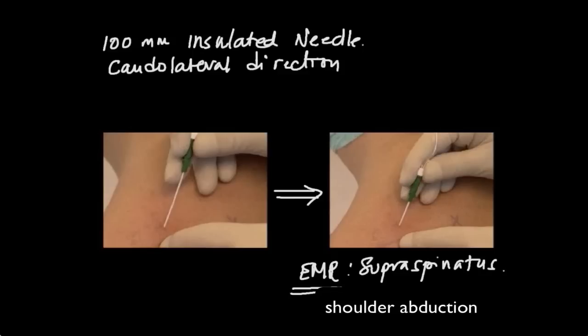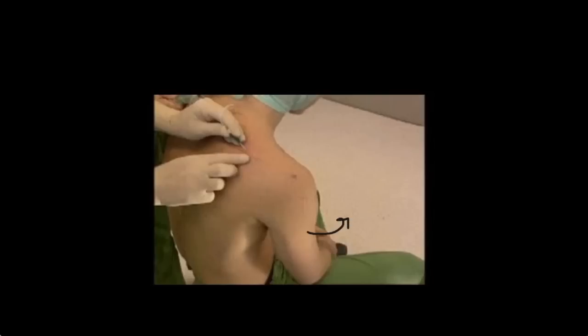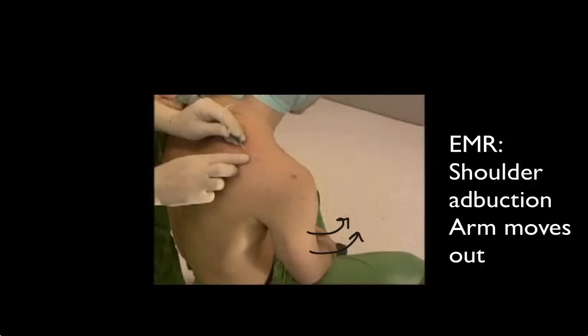Once we stimulate the nerve we will get shoulder abduction. As shown here, once we stimulate the nerve the shoulder abduction is produced, which makes the arm move out and easily helps in identifying that we are very close to the nerve.